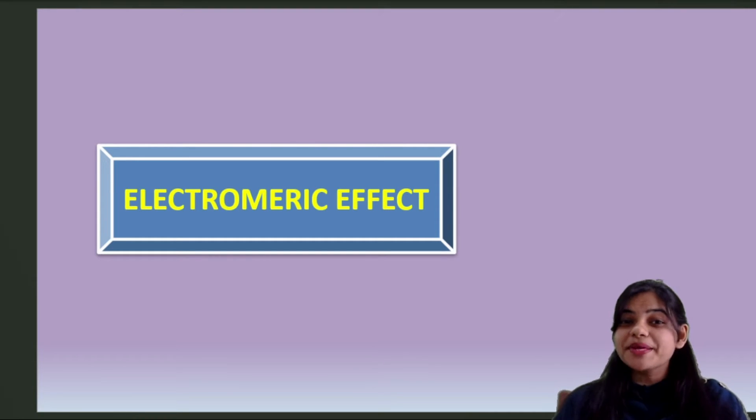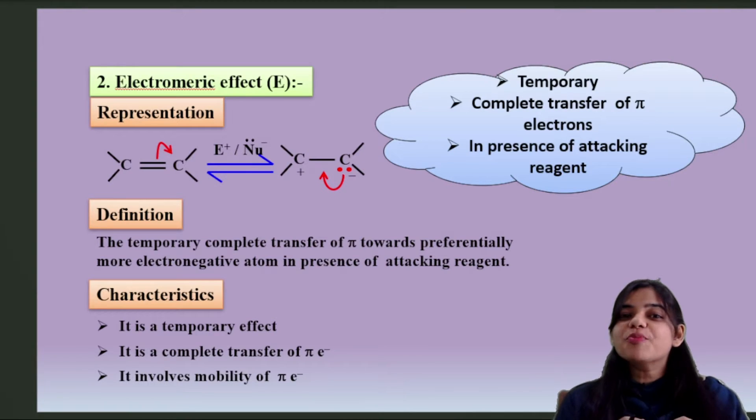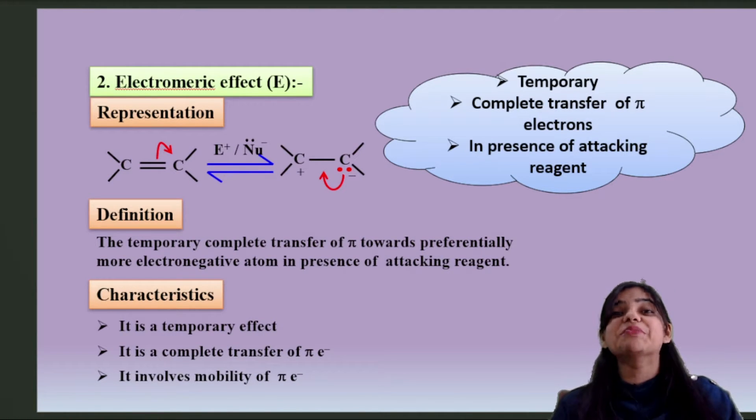So today's topic is electromeric effect. What do you mean by electromeric effect? Electromeric effect is temporary, there is complete transfer of pi electrons, and this takes place only in the presence of attacking reagent.